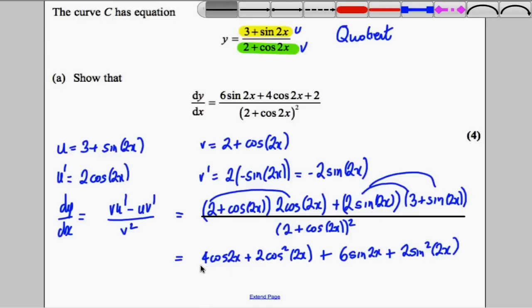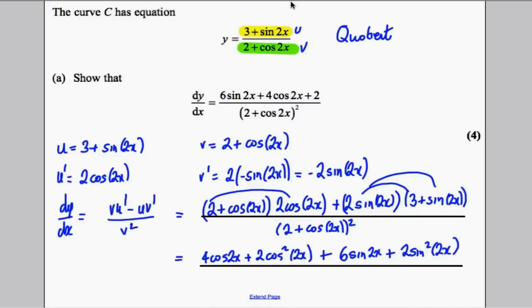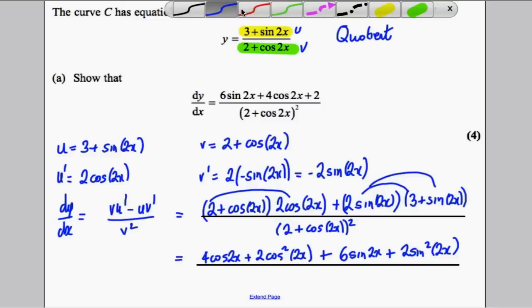And then all divided by, as before, 2 plus cos 2x all squared, 2 plus cos 2x all squared.